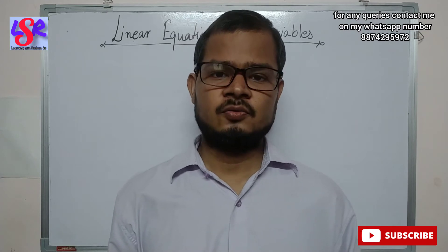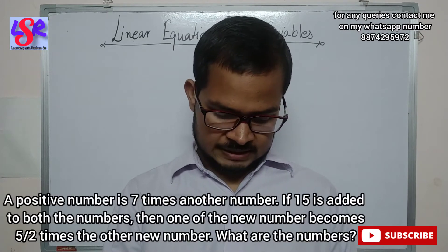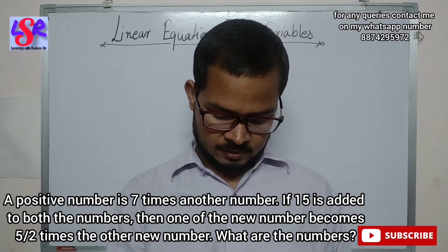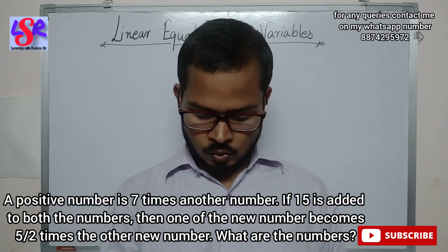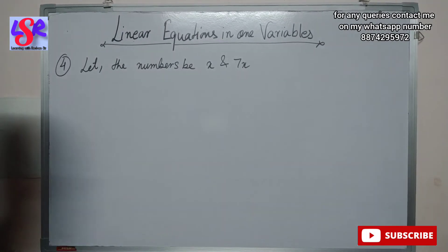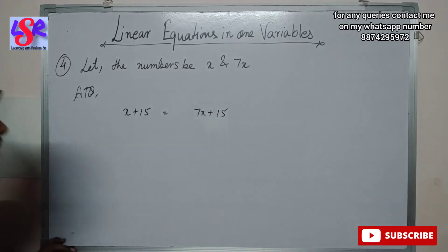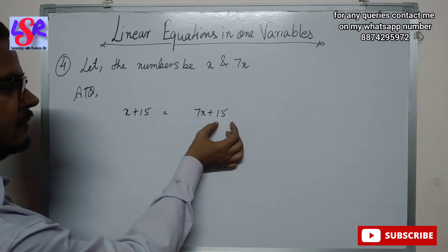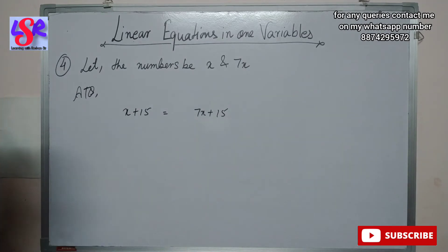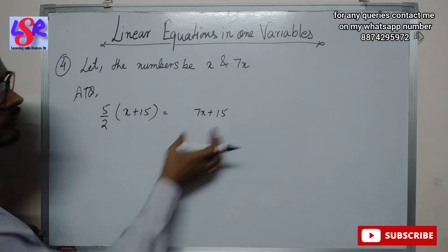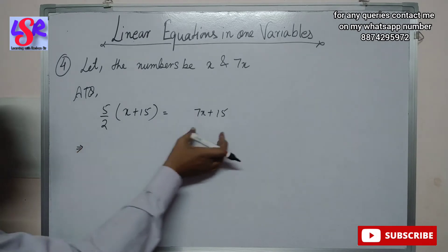Now let's see question number 4. Here, a positive number is 7 times another number. If 15 is added to both the numbers, then one of the new numbers becomes 5 by 2 times the other new number. What are the numbers? Now let the two positive numbers be x and 7x. When 15 is added to both, we can see 7x plus 15 and x plus 15. The smaller one is x plus 15, so we multiply 5 by 2 into this and equate it with 7x plus 15.